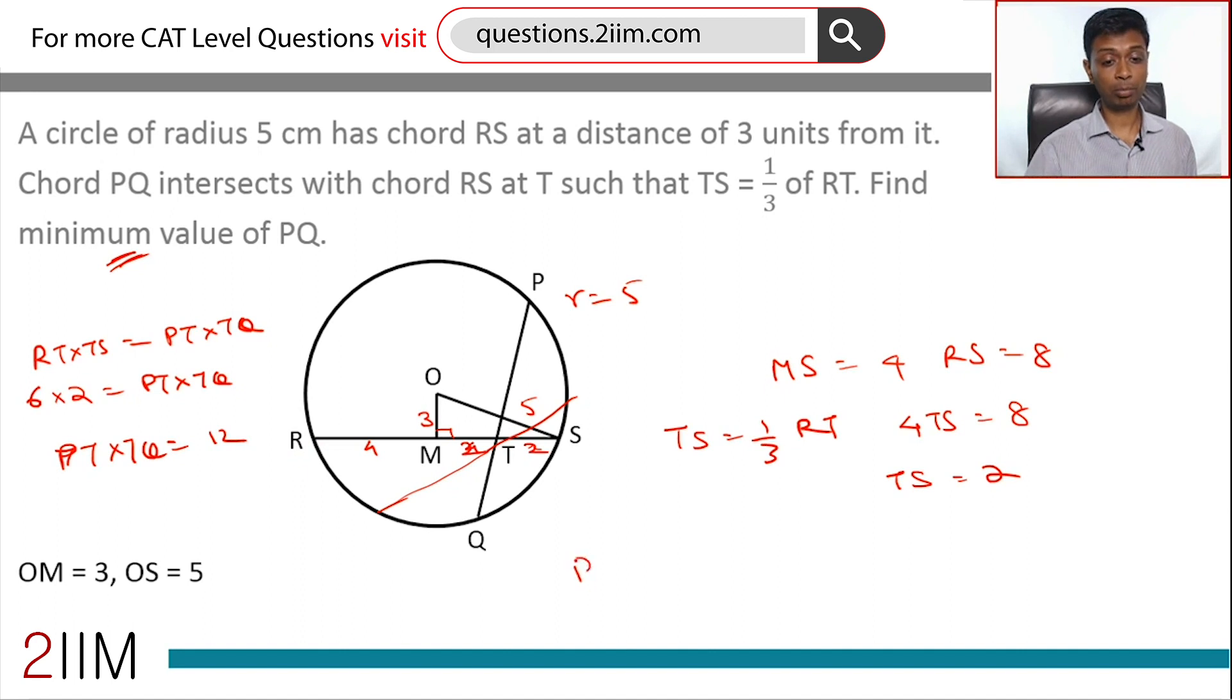We want to find PT plus TQ. If you're given that the product is 12, when will the sum be minimum? The sum will be minimum when the numbers are equal to each other. The minimum case will happen when PT equals TQ equals root 12.